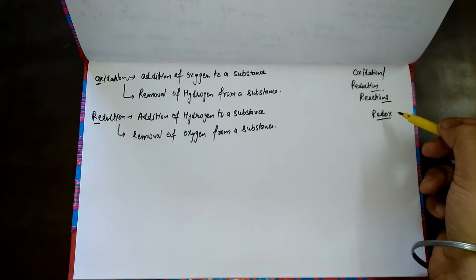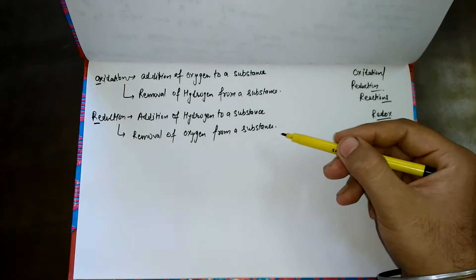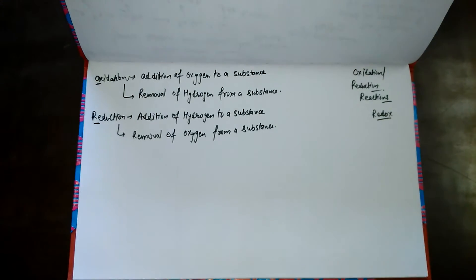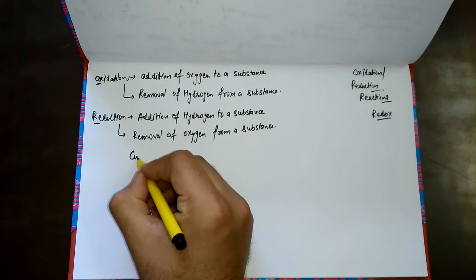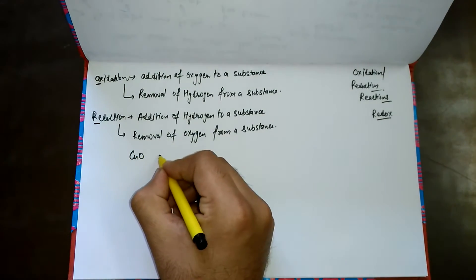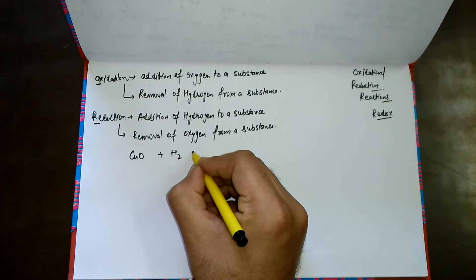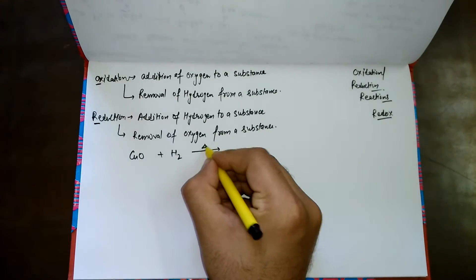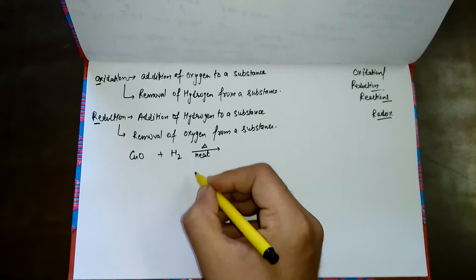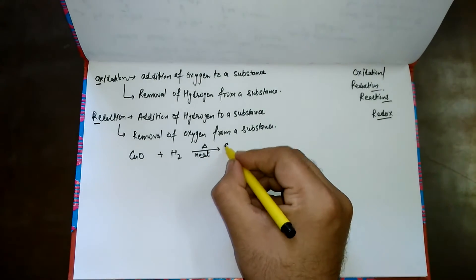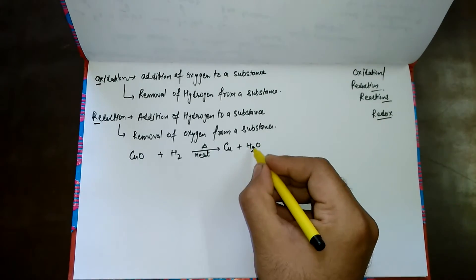I'll give you an example to clarify this concept. If we heat copper oxide in the presence of hydrogen — delta is the symbol of heating — the reaction produces copper and H₂O, that is water.